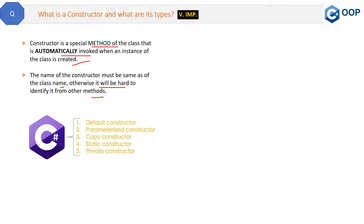In C# we have these types of constructors: default constructor, parameterized constructor, copy constructor, static constructor, and private constructor. We will discuss them one by one in detail.